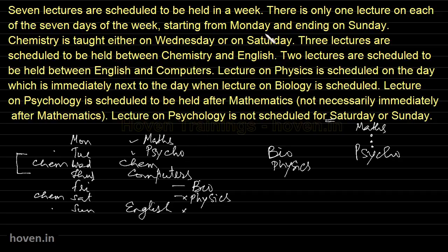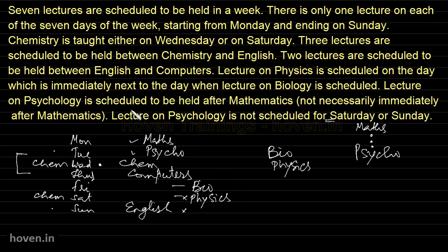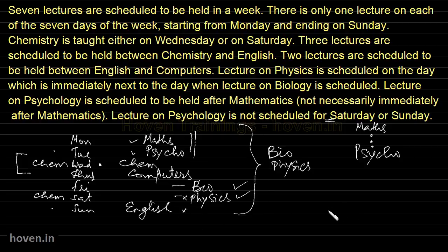Let us verify this arrangement. Chemistry is on Saturday — satisfying the condition. Three lectures between chemistry and English — yes, three lectures confirmed. Two lectures between English and computers — yes, bio and physics are there. Physics is immediately next to biology — also satisfied. Psychology is after mathematics — confirmed. Psychology is not on Saturday or Sunday — also satisfied. So this is the solution to this question.